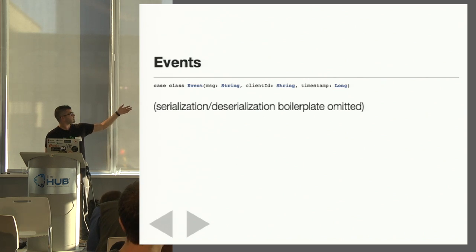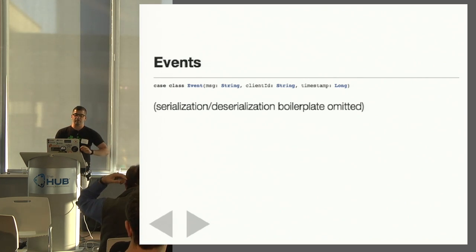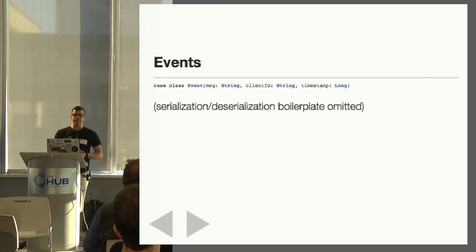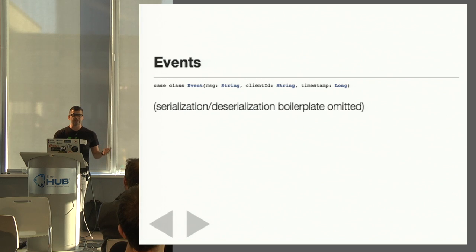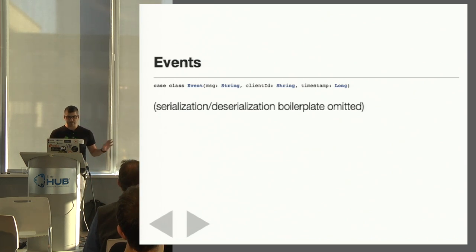I've omitted all the serialization and deserialization boilerplate, but we'll be using JSON in both cases. Over the wire from WebSockets it's pretty simple — JSON is the native format of JavaScript, so we'll just be taking events in that format. Then we'll be publishing them to Kafka in the same format, JSON. That's a lot simpler — we don't need to work with Avro, Protobuf, or Thrift, although we could.